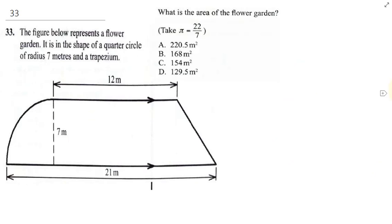Now question 33 says the figure represents a flower garden. It's in the shape of a quarter circle of radius 7 meters and a trapezium. What is the area of the flower garden?